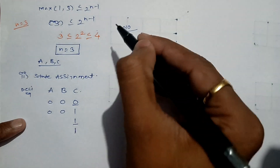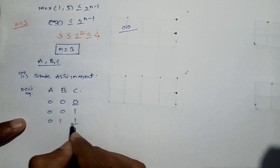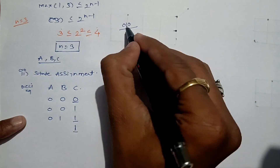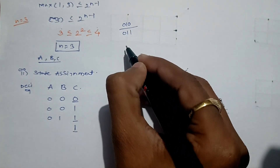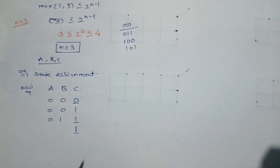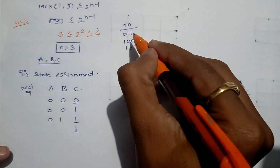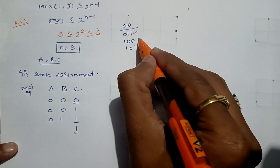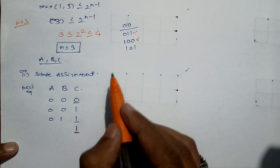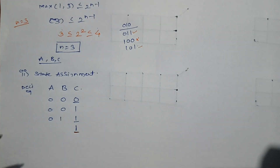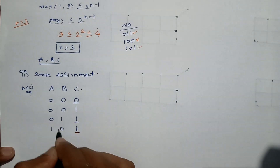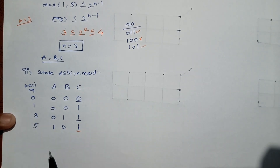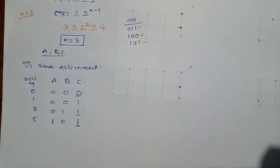For the next state we need two, whose decimal equivalent is zero-one-zero, but we write one at the LSB. Then three is zero-one-one. Next we need one again at LSB, so we look further: five (1-0-1) satisfies this condition. So our state assignments are decimal 0, 1, 3, and 5.